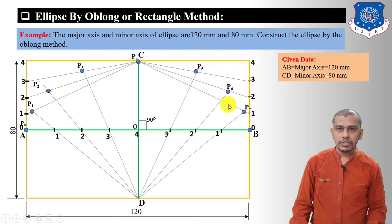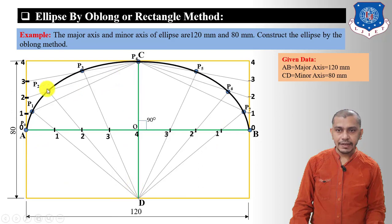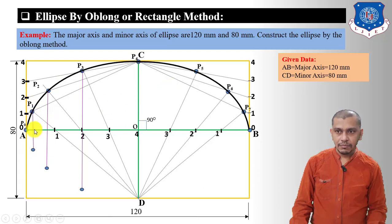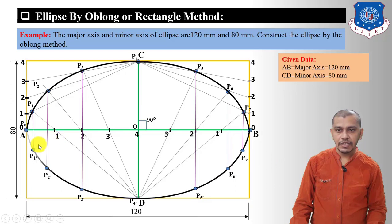Draw the freehand curve passing through these points — this will be an ellipse. Right now this is a half ellipse; we have to apply the same method below. If you don't want to apply the same method, draw lines parallel to the minor axis from P1, P2, P3. Measure the length from the intersection point to the major axis to P1 and mark point P1' at the same length. Similarly mark P2' and P3'. Apply the same for the other side to get P5', P6', P7', and connect these points to complete the ellipse. This is the ellipse by the rectangle or oblong method.